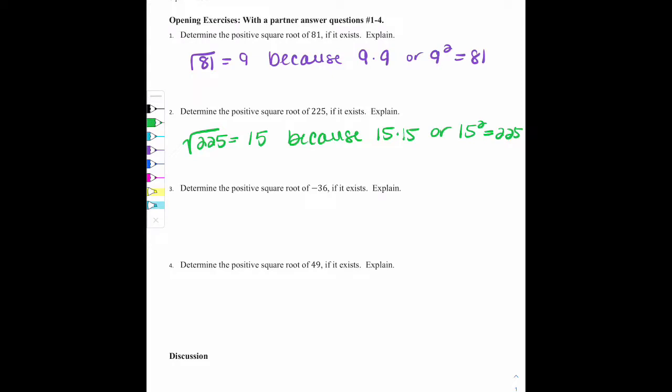When we get to number 3, the square root of negative 36, it does not exist. If you were to type this in your calculator, you would get an error message. Now there's two ways you can explain this.